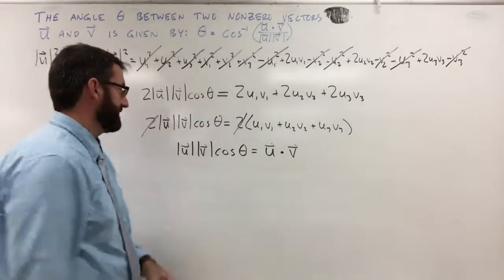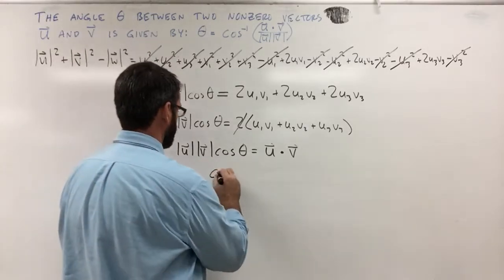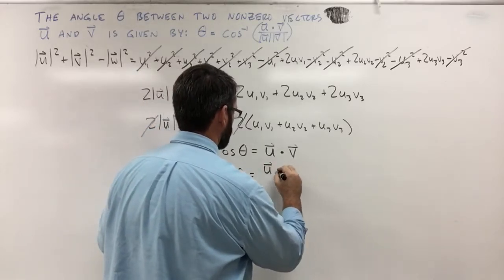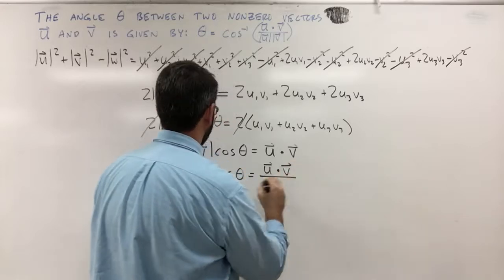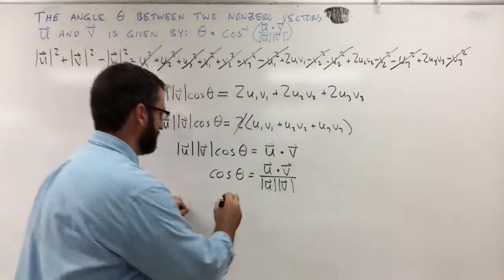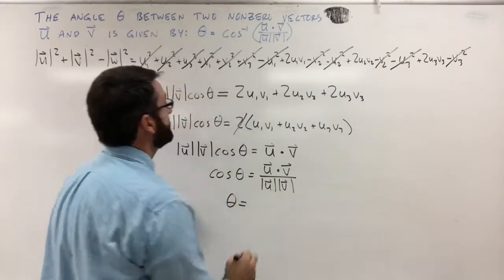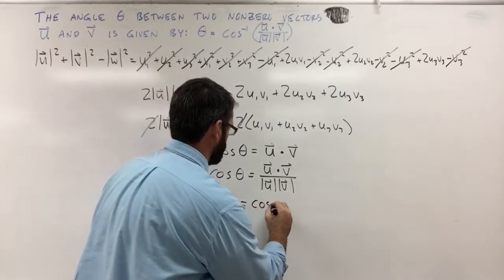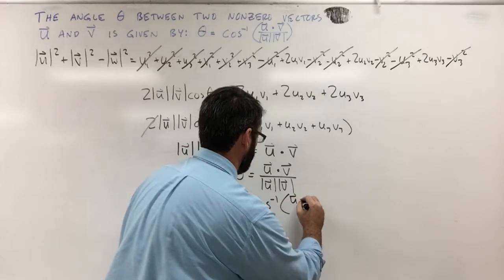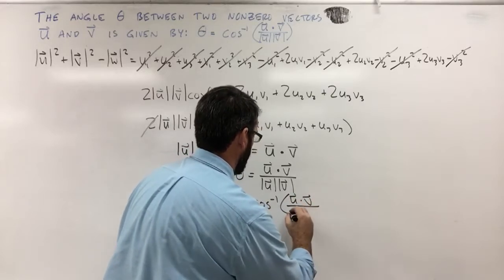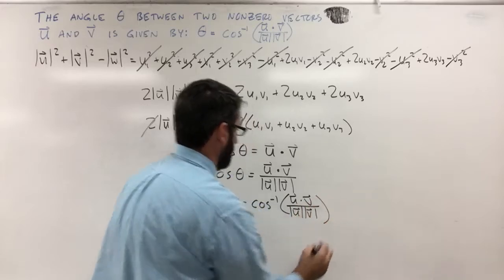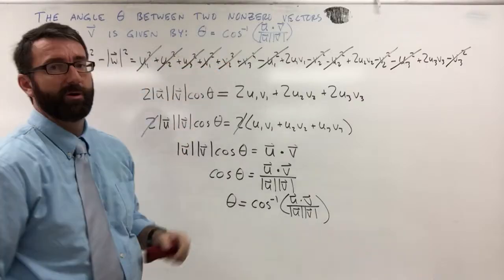Now let's divide both sides by the magnitude of u and the magnitude of v. We get that the cosine of theta is equal to the dot product of u and v divided by the magnitude of u times the magnitude of v. Therefore, theta is equal to the inverse cosine of the dot product of u and v divided by the magnitude of u times the magnitude of v — and that is what we were trying to show.